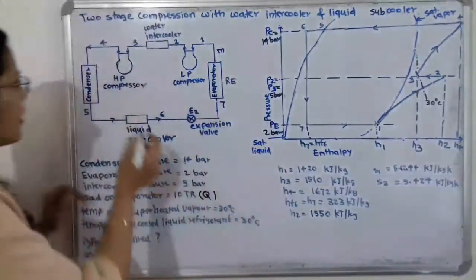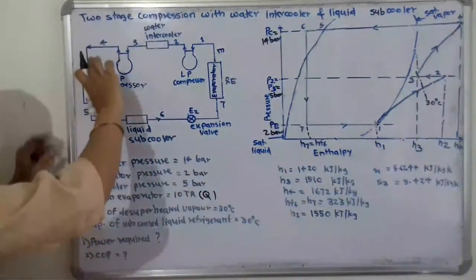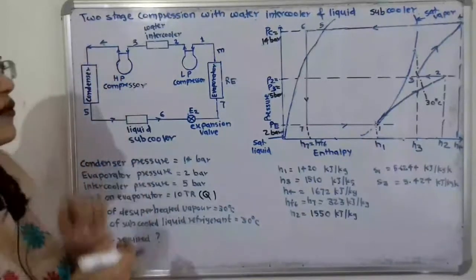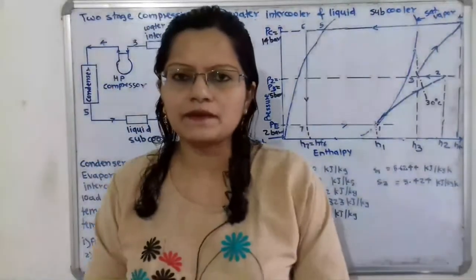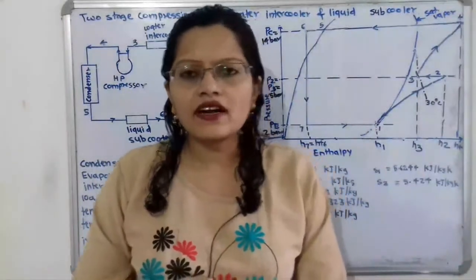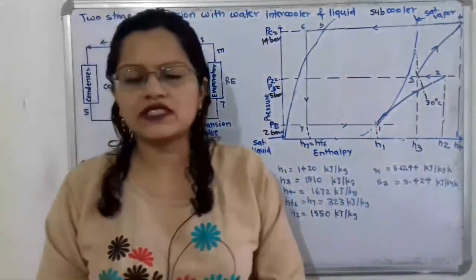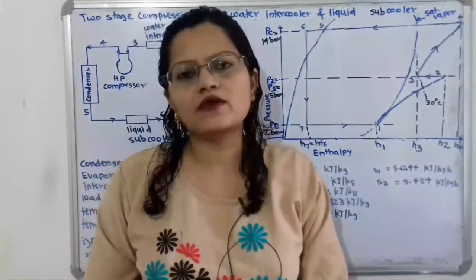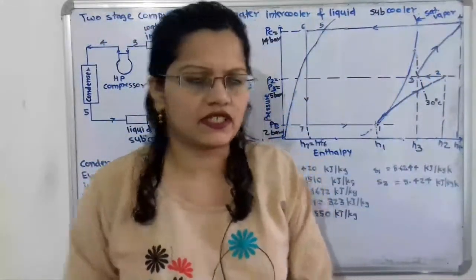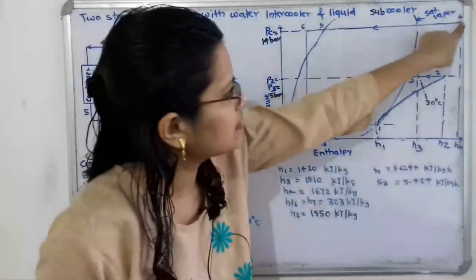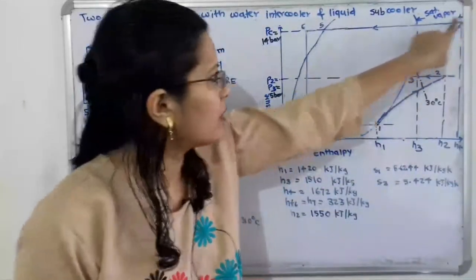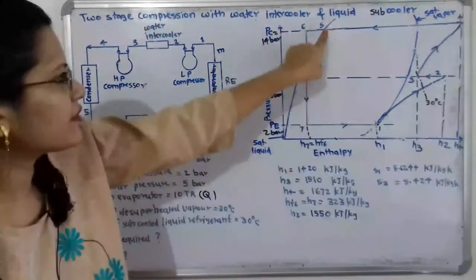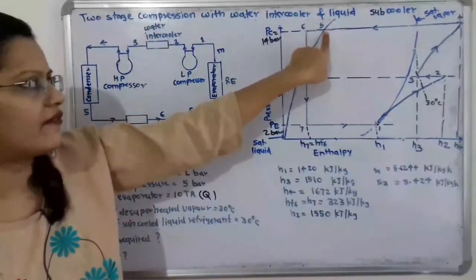Next, the refrigerant enters the condenser, where the cooling process takes place. From point 4, the refrigerant is converted to the saturated liquid state. We extend the line from point 4 to the saturated liquid line, giving us point 5.